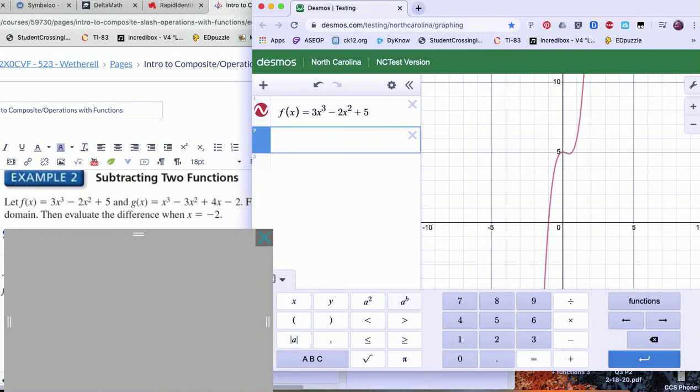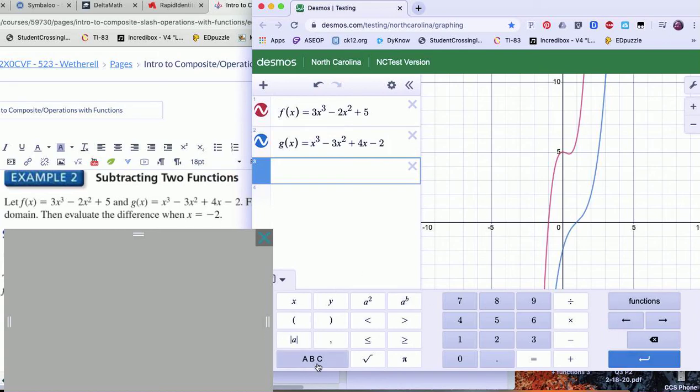G(x) equals x cubed. I can also use my keyboard by hitting the key, whichever way you can figure out is fine. Minus 3x squared plus 4x minus 2.